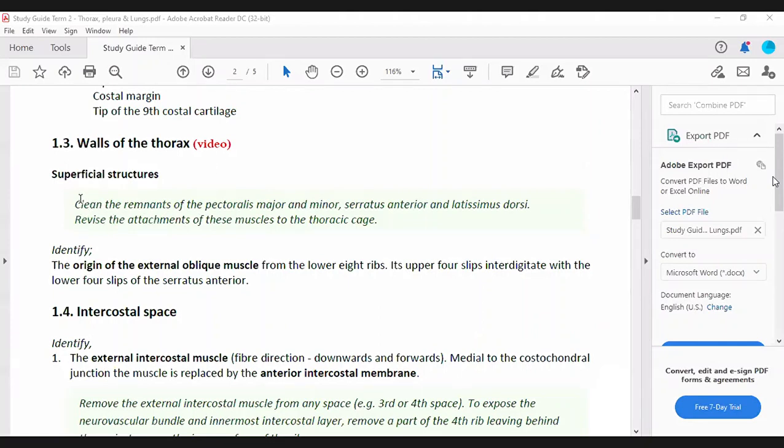There is some dissection given. I don't know because it is a little blue box. However, typically the remnants of the pectoralis major and minor, etcetera. Now I know that you all are not doing a proper... Is it not clear? Sorry.